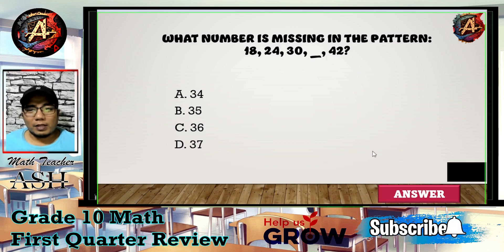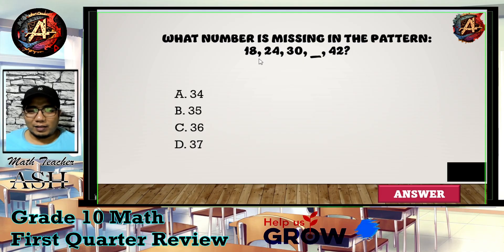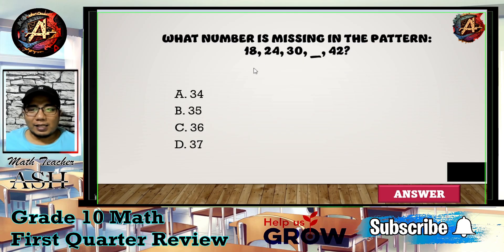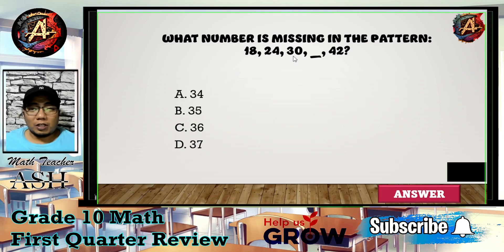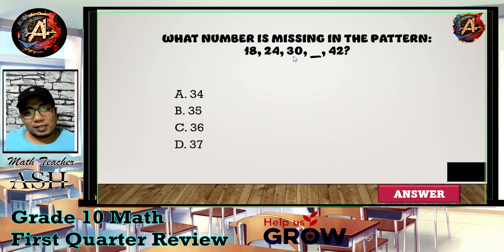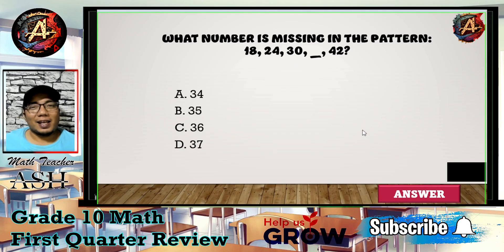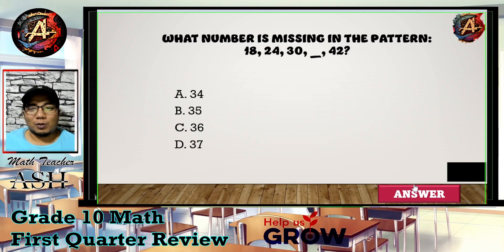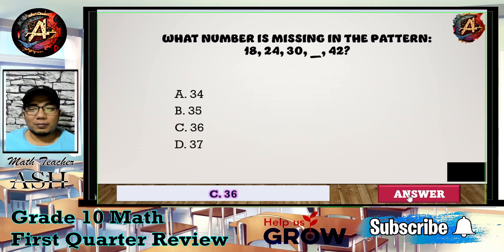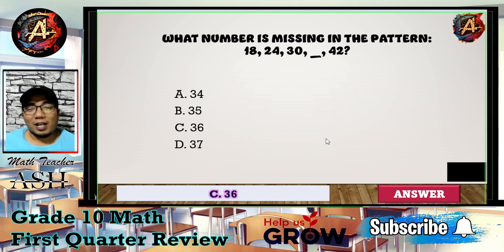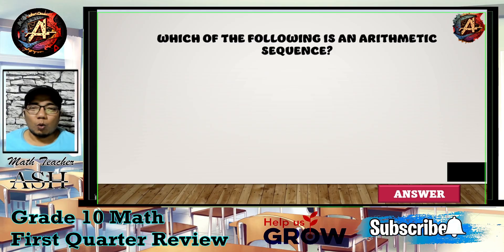We have 18, 24, 30 — it is increasing by 6. So 30 added by 6 equals 36. The correct answer is letter C.